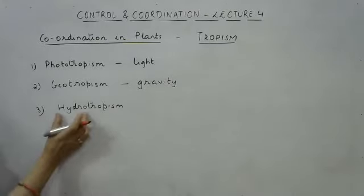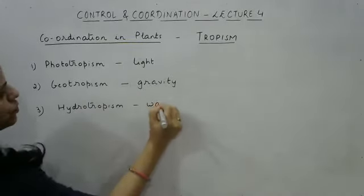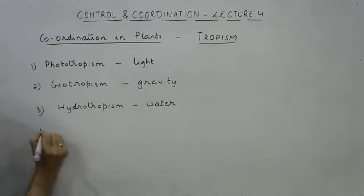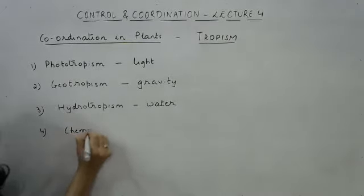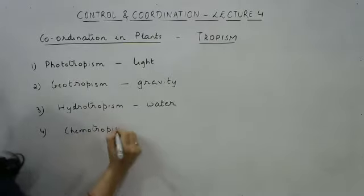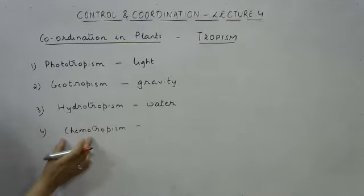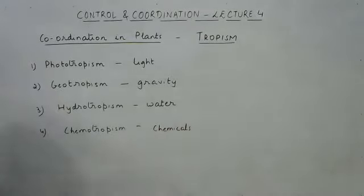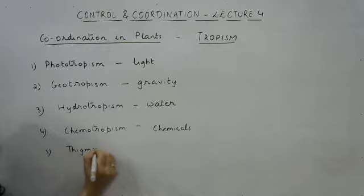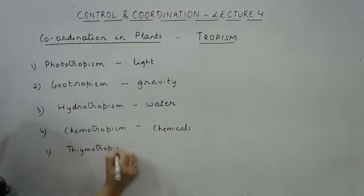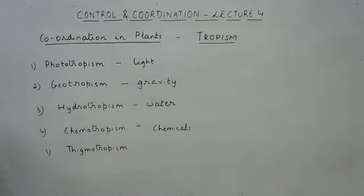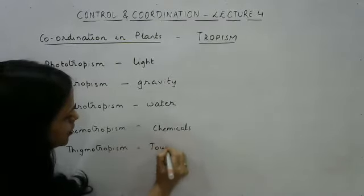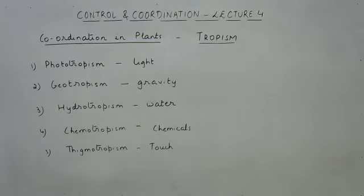The word 'hydro' means water, so hydrotropism is the response to water as a stimulus. The fourth type is chemotropism — 'chemo' means chemicals, so the stimulus is chemicals. And the fifth one is thigmotropism, which means touch acts as a stimulus. So these are the various types of tropism in plants.